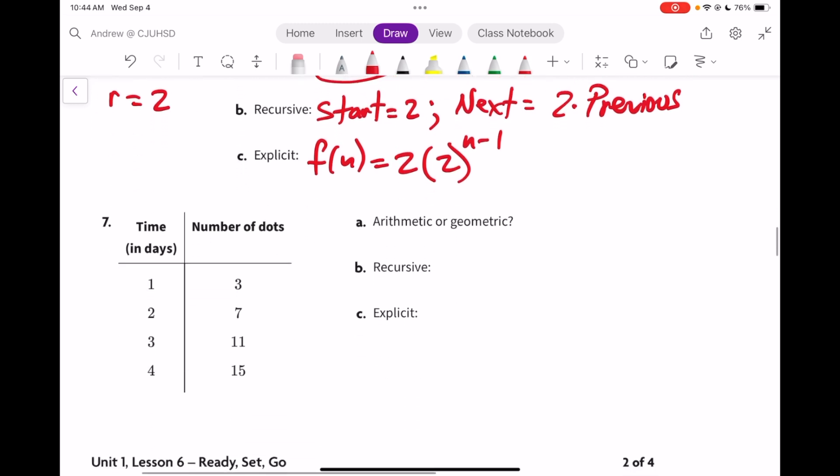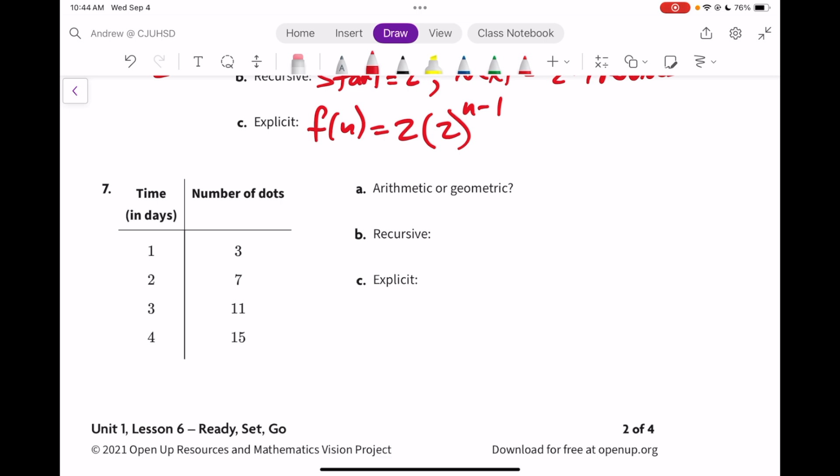Number 7 presents it to us as a table, but it's not really very different at all. We're still starting here at 3. We're going up by 4, so this is arithmetic. The recursive, start at 3, and next equals previous plus 4. The explicit would be f(n) equals starting point 3, common difference 4, times n minus 1.